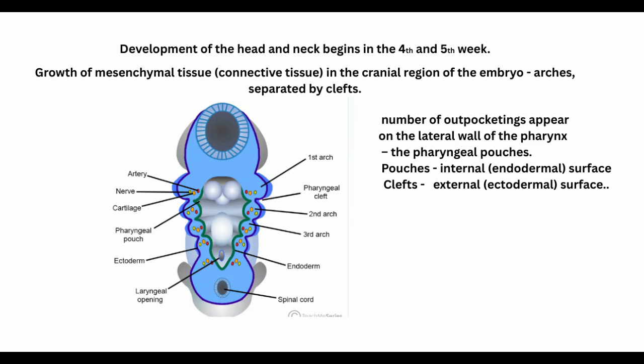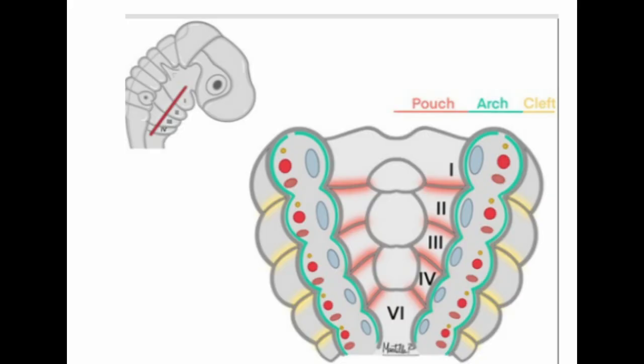The development of head and neck begins in the fourth week. Growth of the mesenchymal tissue — connective tissue — in the cranial region of the embryo forms arches separated by clefts. Outpocketings appear on the lateral wall of the pharynx, called pharyngeal pouches — the pouches are endodermal and the clefts or external ones are ectodermal. The arches are the first, second, third, fourth, and sixth, with four clefts and four pouches.